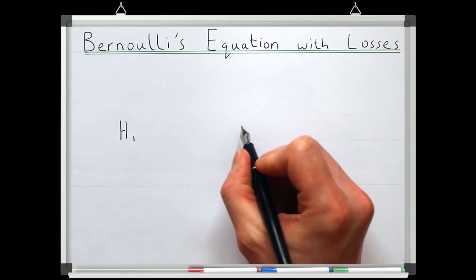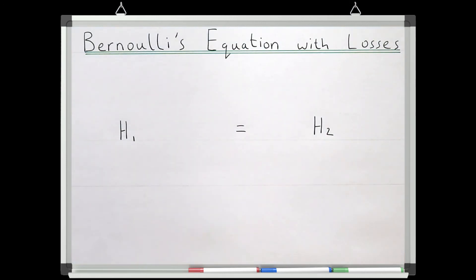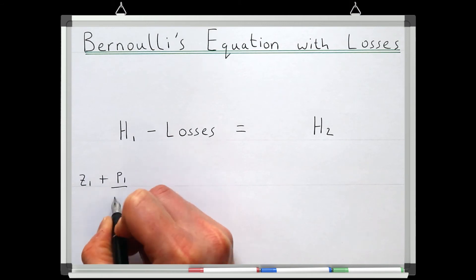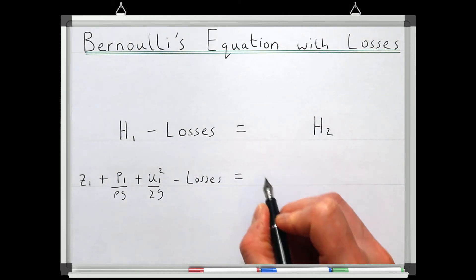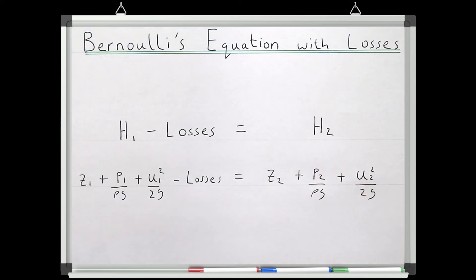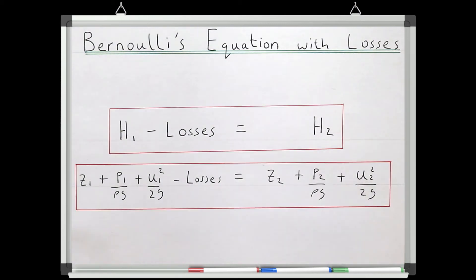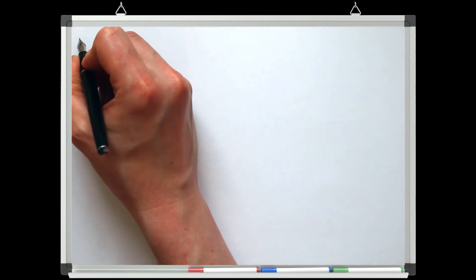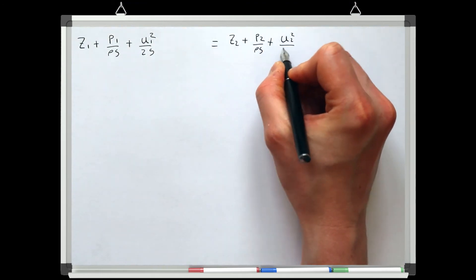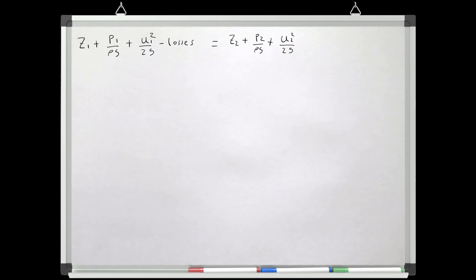The problem is that we assumed the total pressure head at point 1 equals that at point 2, when in fact energy has been lost between the two points. We can correct for this by subtracting the total losses in the system from the initial pressure head at point 1 — so the final pressure head at point 2 equals the initial pressure head at point 1 minus the total losses. Let's now apply this new version of Bernoulli's equation, accounting for losses, between point 1 and point 2.